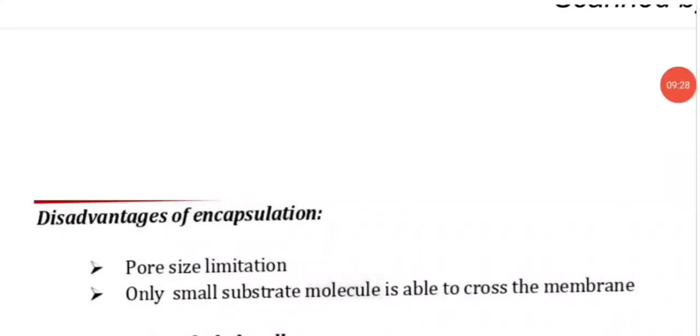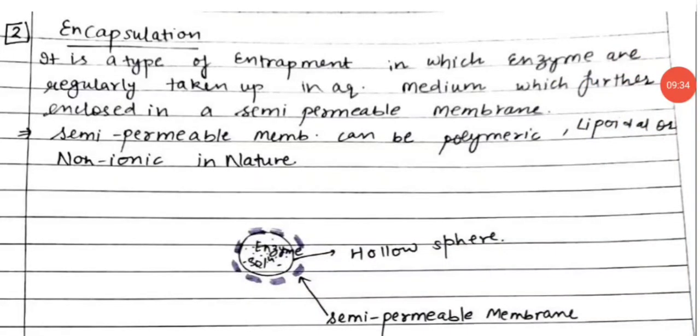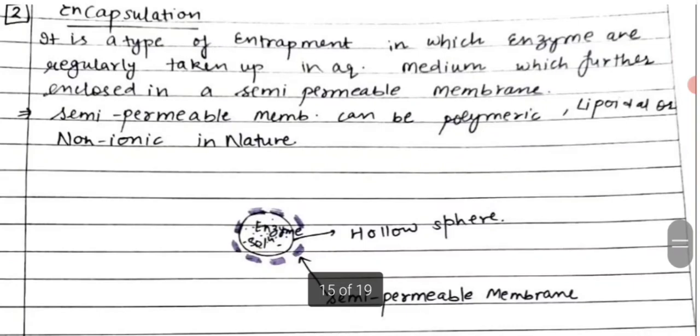Disadvantages are pore size limitation, only small substrate molecules are able to cross the membrane. Encapsulation is a type of entrapment in which the enzymes are taken up in aqueous medium which is further enclosed in a semi-permeable membrane. Semi-permeable membrane here can be polymeric, lipoidal or non-ionic in nature.